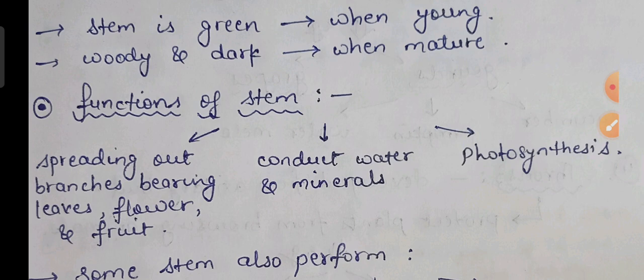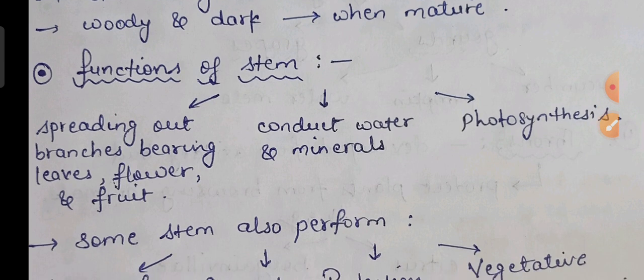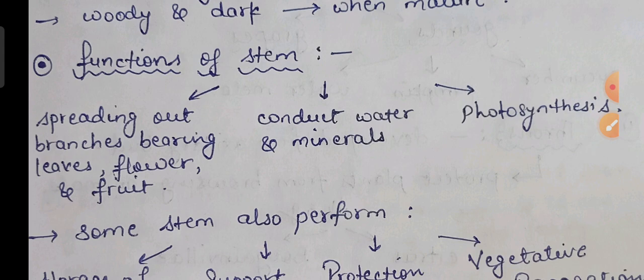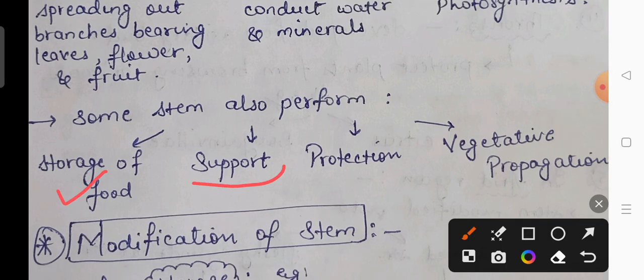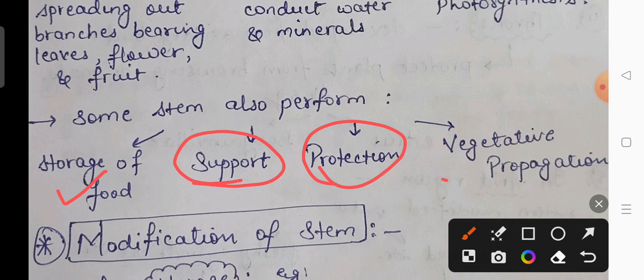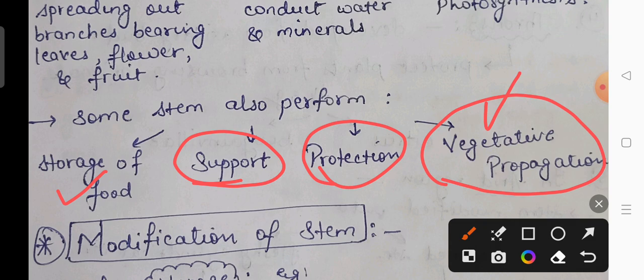Additional functions of the stem include food storage, providing support, giving protection to the plant, and very importantly — vegetative propagation. Vegetative propagation means the arising of a new plant from parts of the plant other than the flower — for example, from roots, stems, or leaves. If a new plant arises from any of these parts, it is called vegetative propagation.